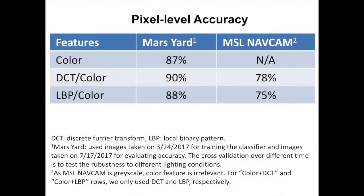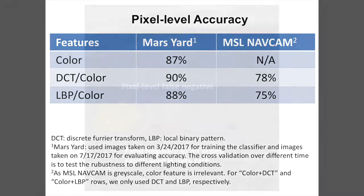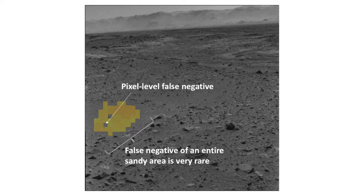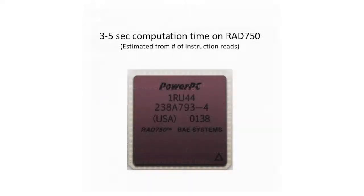The pixel-wise accuracy measured by cross-validation is 90% in the Mars Yard and 78% on the NavCam dataset from MSL. However, despite pixel-level false positives and false negatives, the likelihood of misidentifying a sandy area the size of the rover is very small. The estimated running time on a RAD 750 per one NavCam image is 3 to 5 seconds.